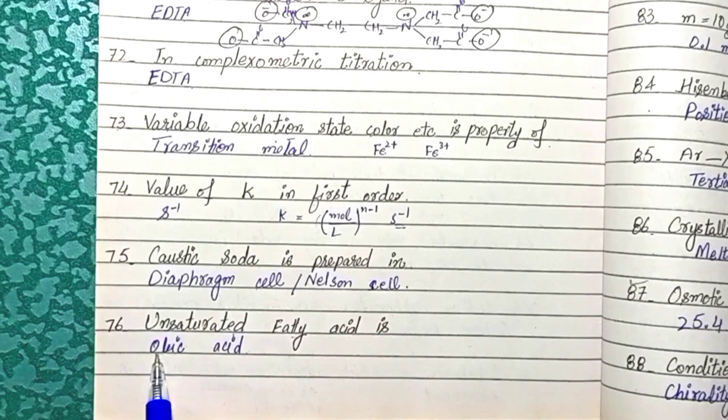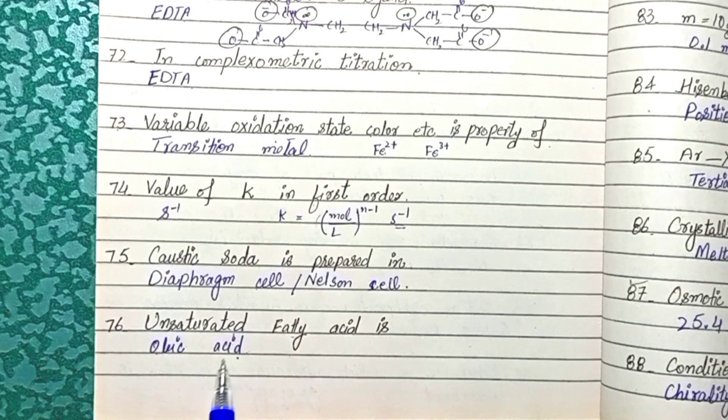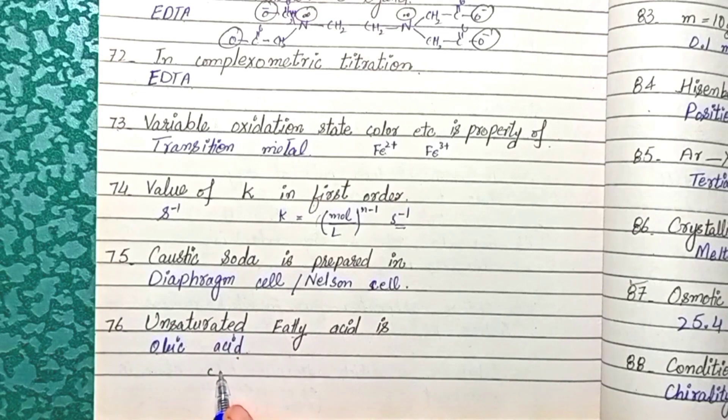Question 76: Unsaturated fatty acid is oleic acid. Oleic acid is an unsaturated fatty acid that contains carbon-to-carbon double bonds.